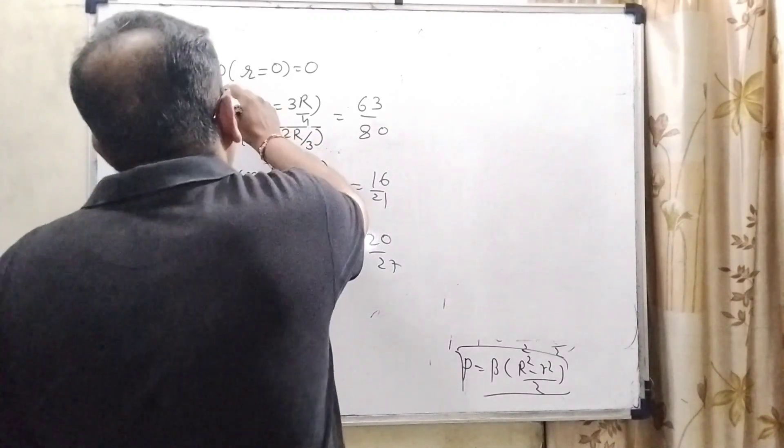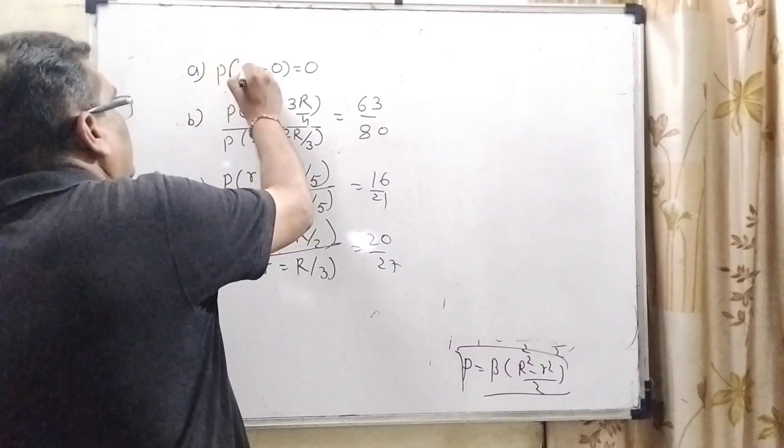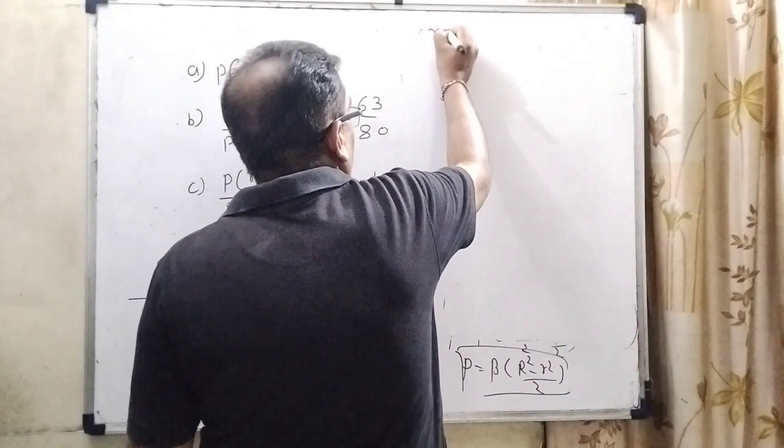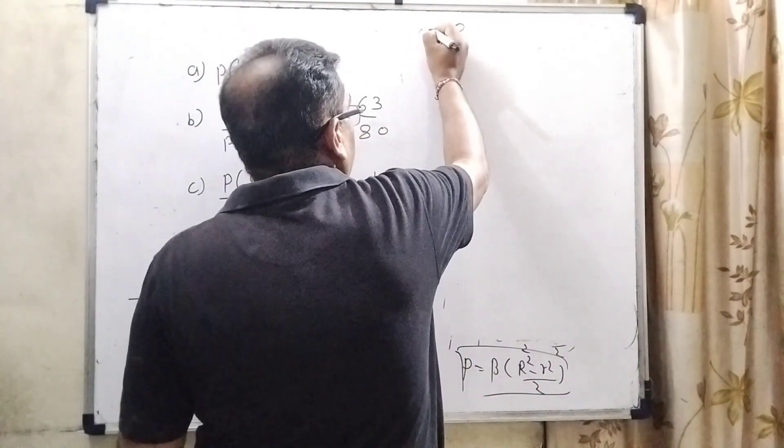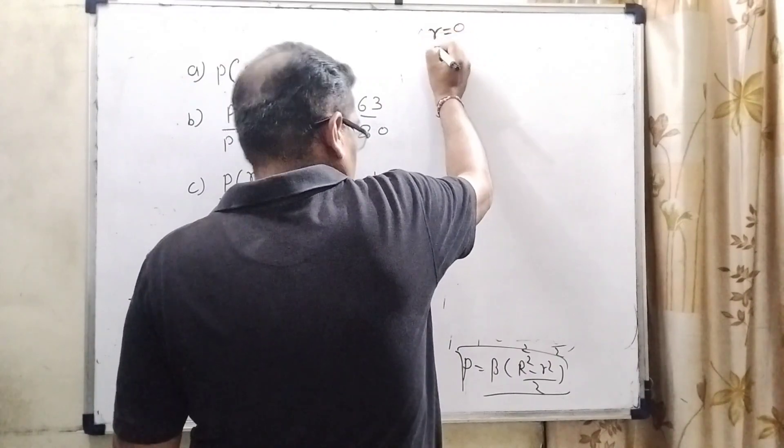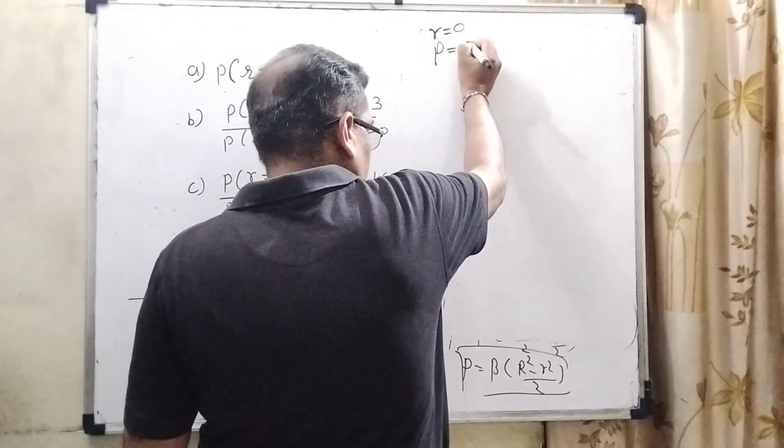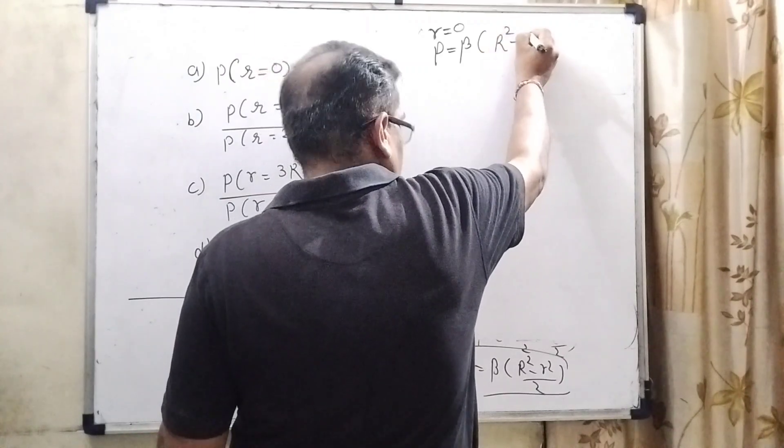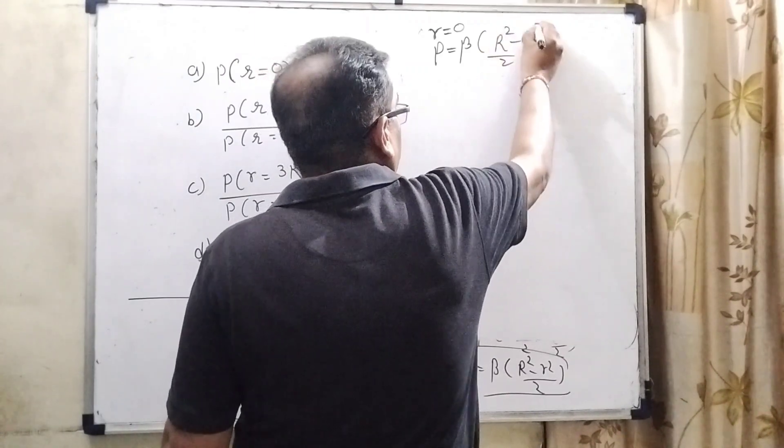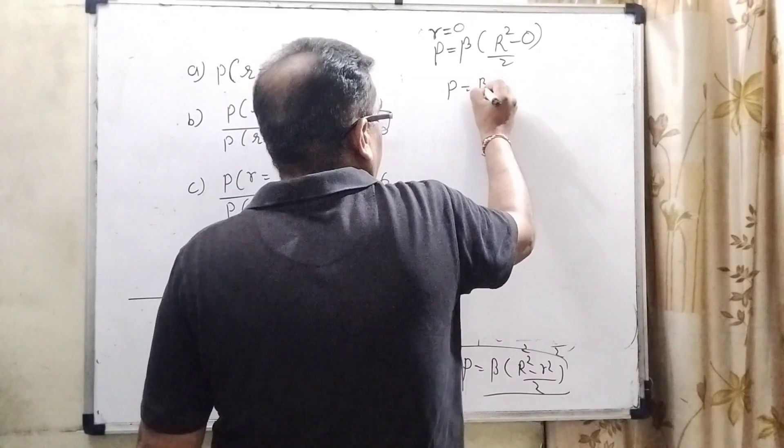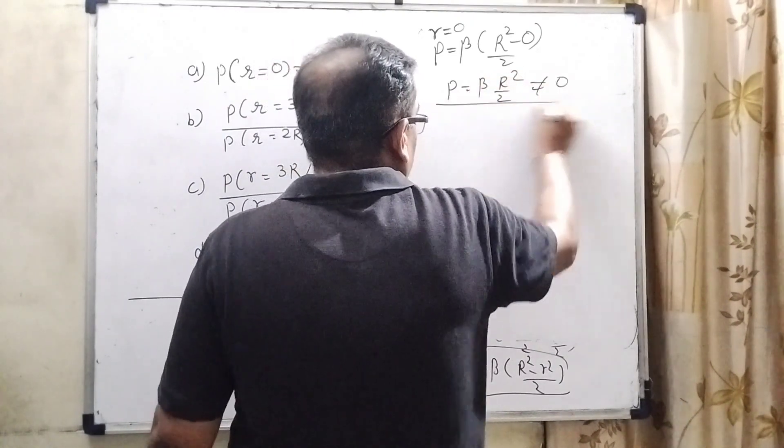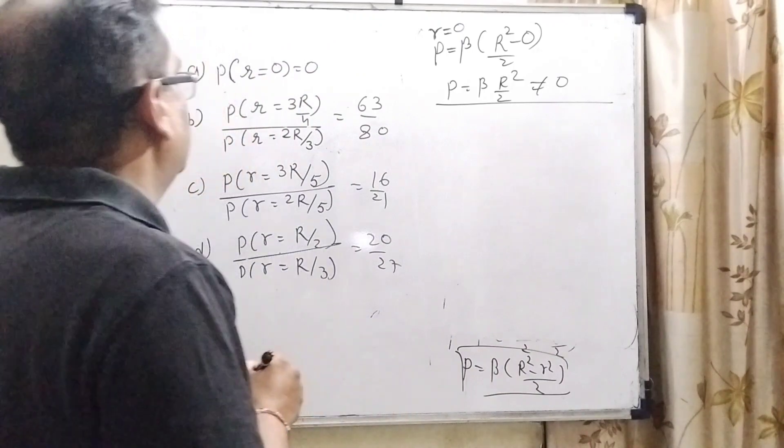Here first value P at r equals 0. So therefore let us first substitute r equals 0 in our given value. P equals beta capital R square minus 0 upon 2. So therefore P equals beta R square by 2. It is not equal to 0. So therefore the first answer is not possible.